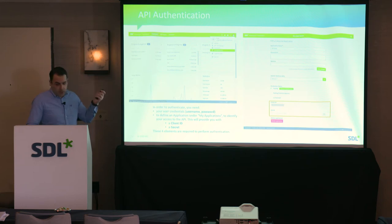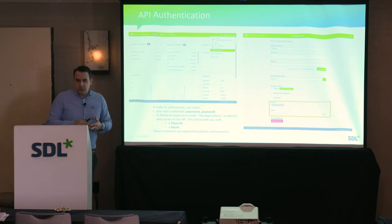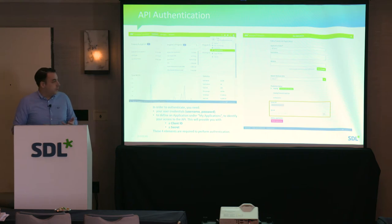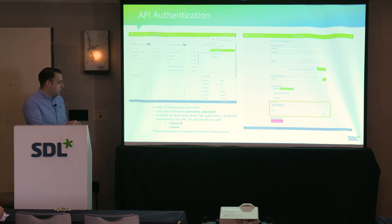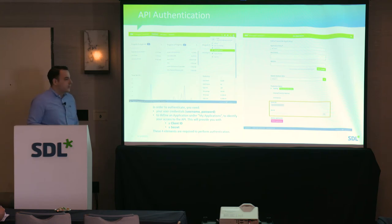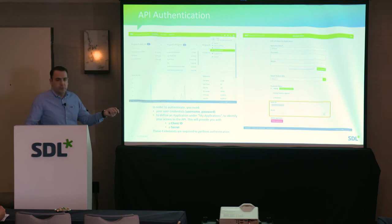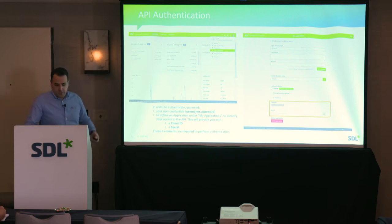For API authentication, you need user credentials — username and password. You can define one or more applications, each giving you a client ID and secret. Using all this information, you can then authenticate, allowing you to have multiple integrations and discern which is which and what the API accesses.